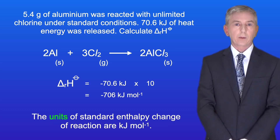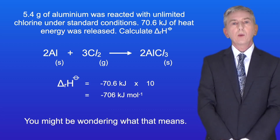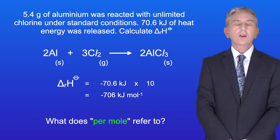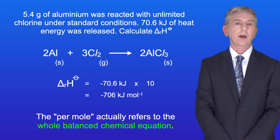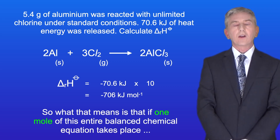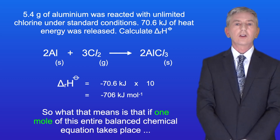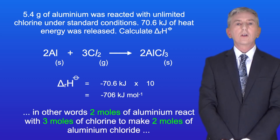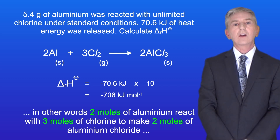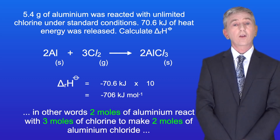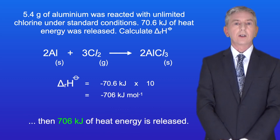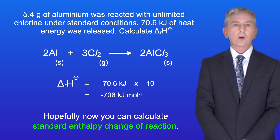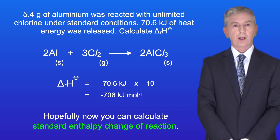The units of standard enthalpy change of reaction are kilojoules per mole, and you might be wondering what that means — what does 'per mole' refer to? Well, the 'per mole' actually refers to the whole balanced chemical equation. So what that means is that if one mole of this entire balanced chemical equation takes place — in other words, 2 moles of aluminium react with 3 moles of chlorine to make 2 moles of aluminium chloride — then 706 kilojoules of heat energy is released. Hopefully now you can calculate standard enthalpy change of reaction.